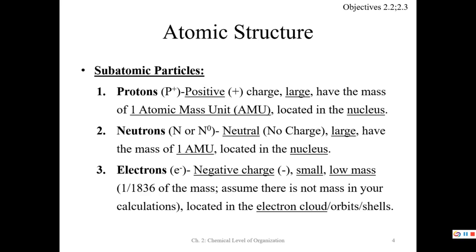Electrons are negative — E-negative. Think: if you got electrocuted, that'd be a very negative thing to happen to somebody. Electrons are very small and have very low mass — about one one-thousand-eight-hundred-thirty-sixth of the mass of a proton, so we're going to say basically no mass. They're located in the electron cloud, the orbits or shells.